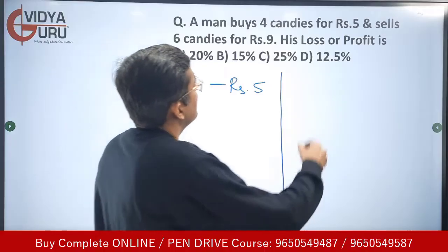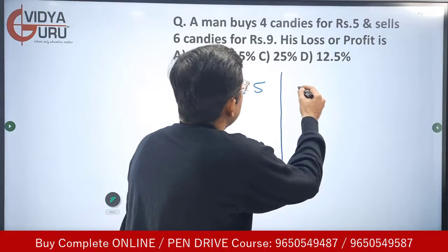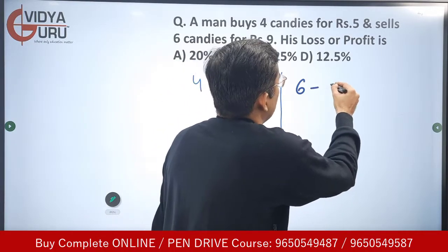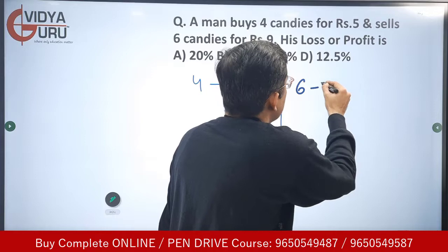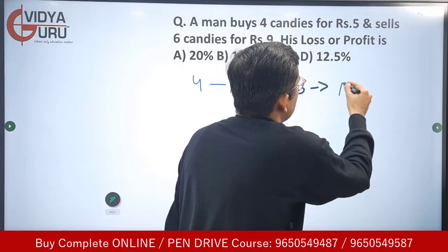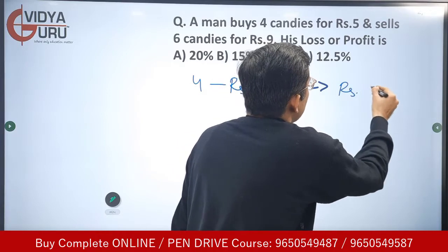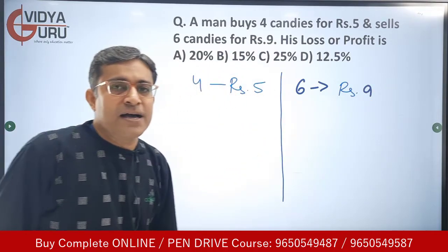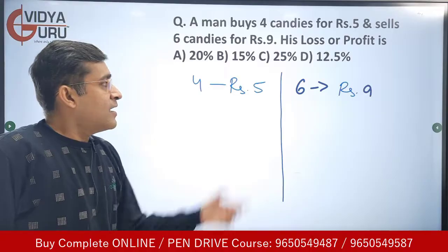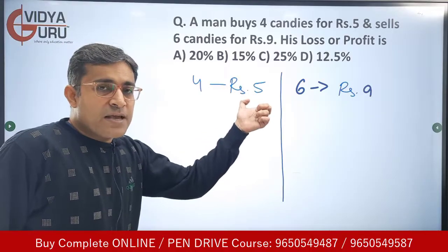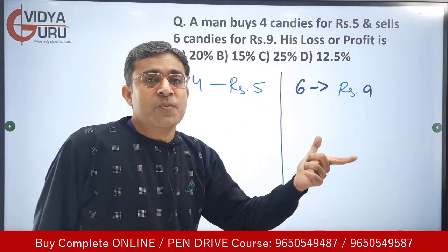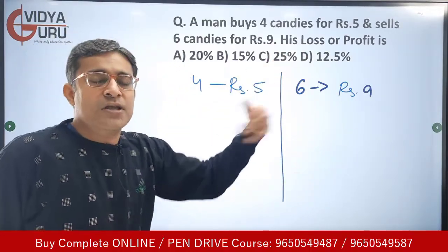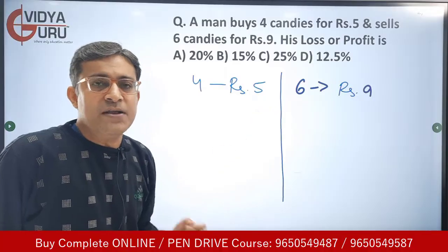Six candies are being sold for rupees nine, that means rupees nine is the selling price. The selling price and the cost price have to be compared in order to find out the loss and profit percentage.